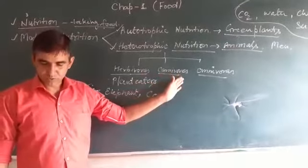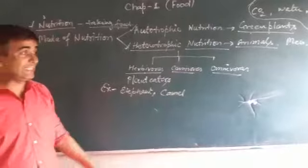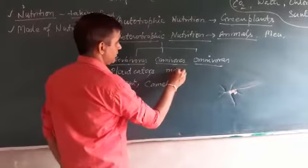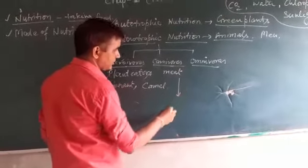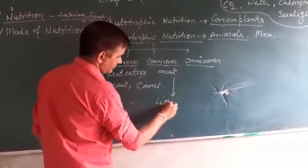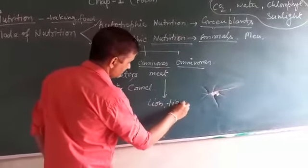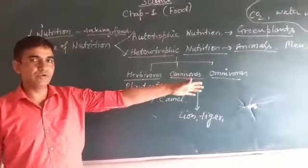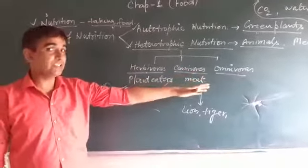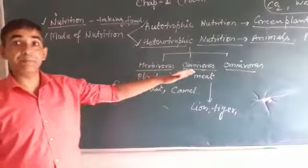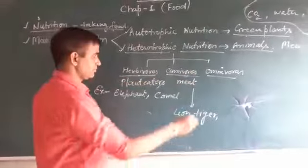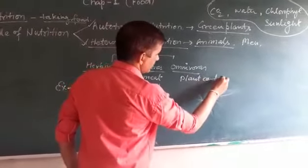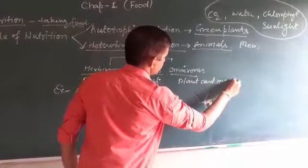Talking about carnivorous — these are animals which eat meat only; they are meat eaters. Examples are lion and tiger. And omnivorous — the organisms which eat both plants and meat are called omnivorous.